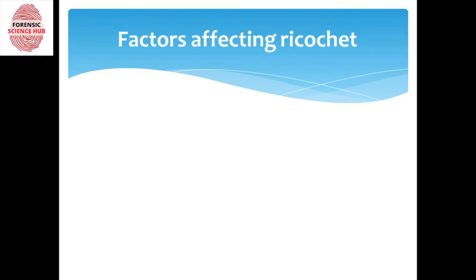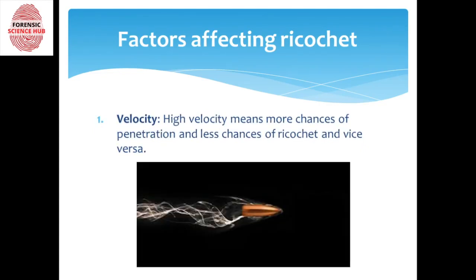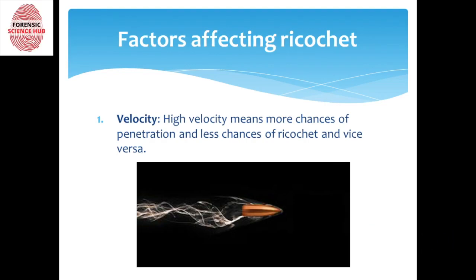Now let's talk about factors that affect ricochet. First is velocity — it can be high or low. High velocity bullets have more chances of penetration and less chances of ricocheting. This is because in high velocity the speed is obviously more, so the energy is more — from the kinetic energy formula, half mv². Greater velocity means greater kinetic energy, which leads to more chances of fracture or melting of the target, so the bullet penetrates rather than bouncing off. This energy may also melt or disintegrate the bullet itself.